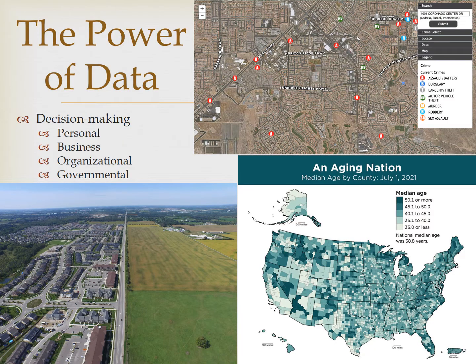Governments may use spatial data to address air pollution. They are also interested in statistics on crime and homelessness, which can influence where they may locate shelters, street lights and security cameras, or where greater police presence may be needed. Really, the uses of geographic data are limitless and depend on the problem that is attempting to be addressed.